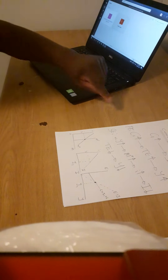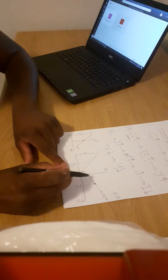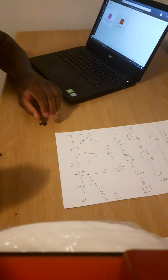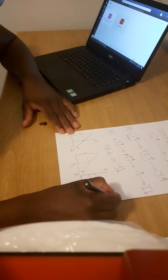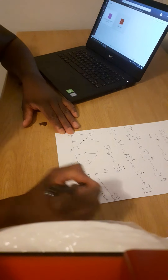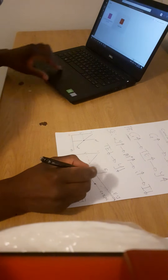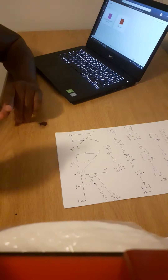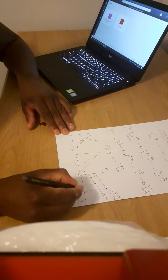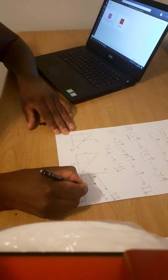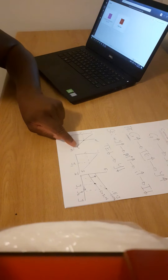Now suppose government expenditure increases. Total expenditure increases, so the expenditure line shifts up to C plus I plus G1. The new equilibrium moves to Y2. That is the primary effect — output increases immediately. But Y2 means people have more income, so they will demand more money.